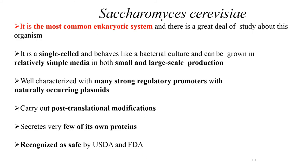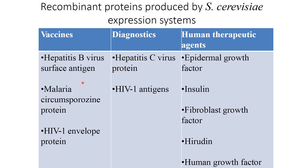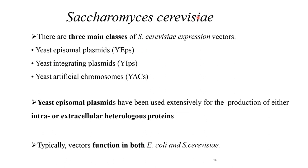Recombinant proteins produced by the S. cerevisiae expression system include vaccines like hepatitis B virus surface antigen, diagnostics like hepatitis C virus protein, and human therapeutic agents such as epidermal growth factor, malaria circumsporozoite protein, HIV antigen, insulin, HIV-1 envelope protein, fibroblast growth factor, hirudin, and human growth factor.